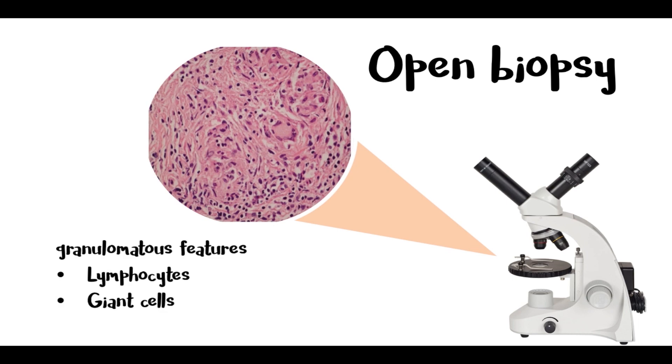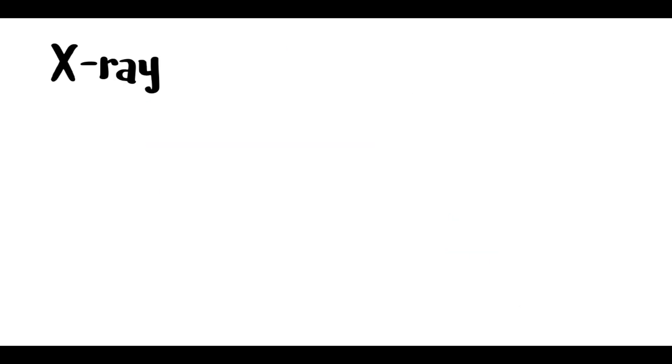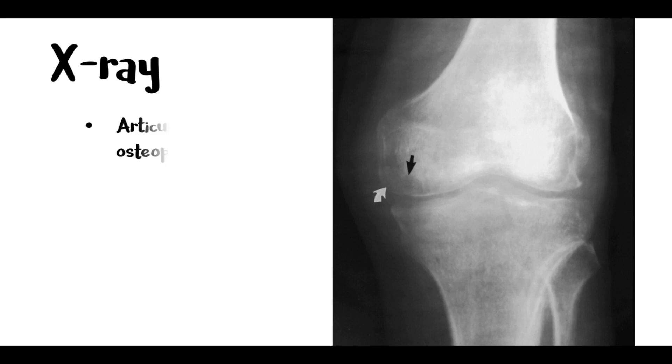In an X-ray film, classic TB arthritis will show articular osteoporosis, peripheral osseous erosion, and narrowed interarticular space.